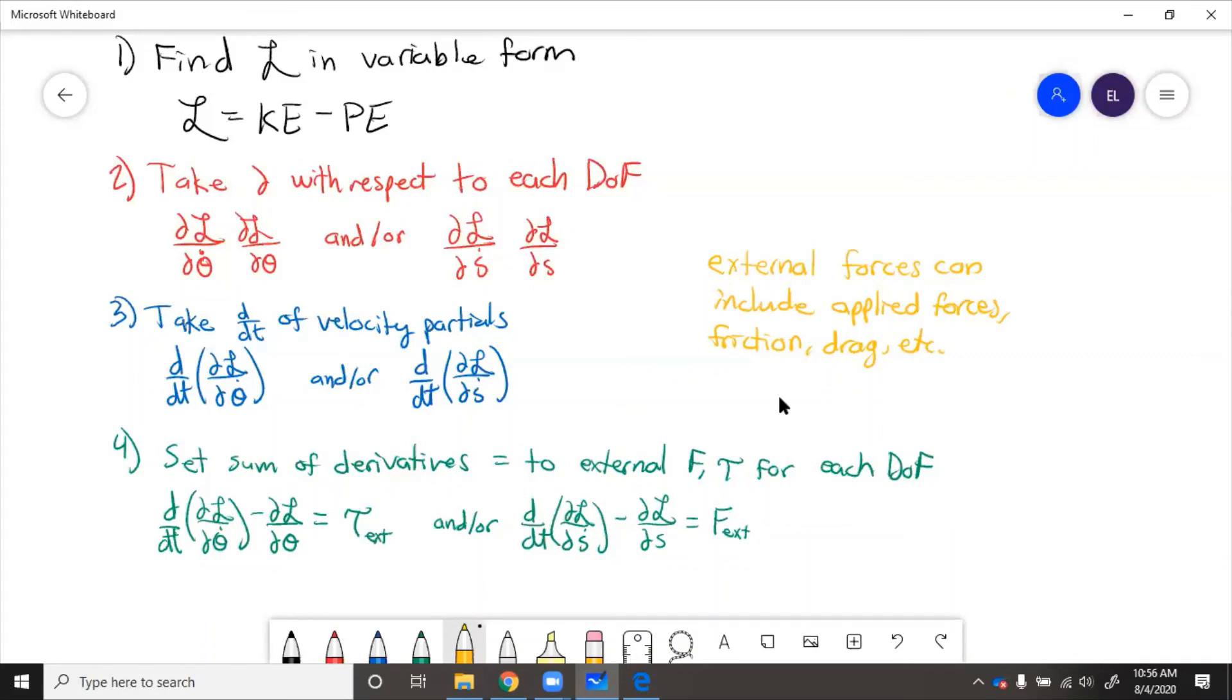Lagrange's equations are something that you want to use instead of Newton's method whenever the system is really complicated. So if it's something that's very simple, or if acceleration is zero, then Newton's method is a good approach.